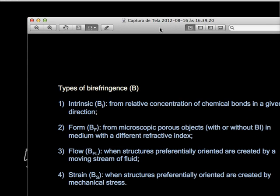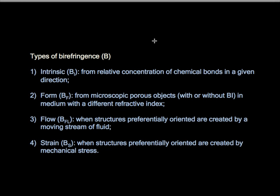We can now define the types of birefringence. We have intrinsic birefringence, related to the chemical bonds of the material. We have form birefringence, from microscopic porous objects in a medium with a different refractive index. And we have two types of birefringence created by flowing stream fluid and mechanical stress.